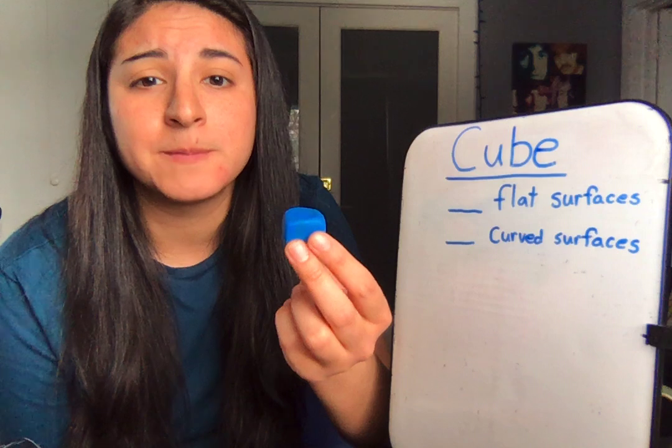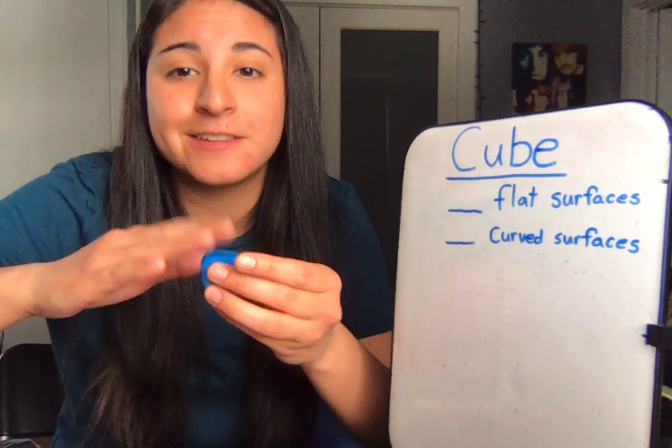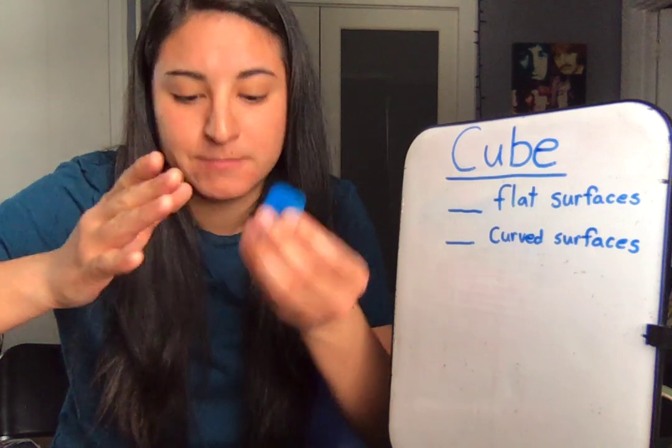A cube is a 3D shape with six flat surfaces. Let's count them.